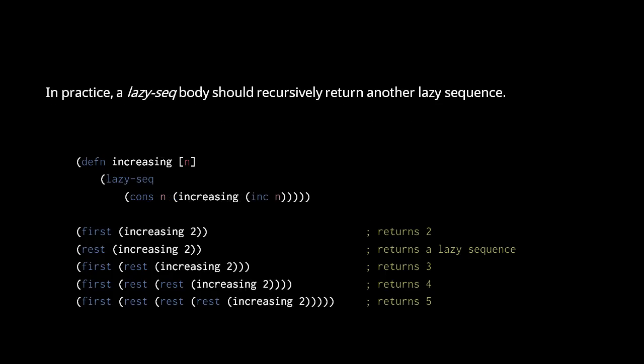Here's another function that produces a lazySeq called increasing. The increasing function takes a number argument and returns a lazySeq whose encapsulated function returns a cons with that number value and a reference to the lazySeq returned by invoking increasing with an argument that is 1 greater.